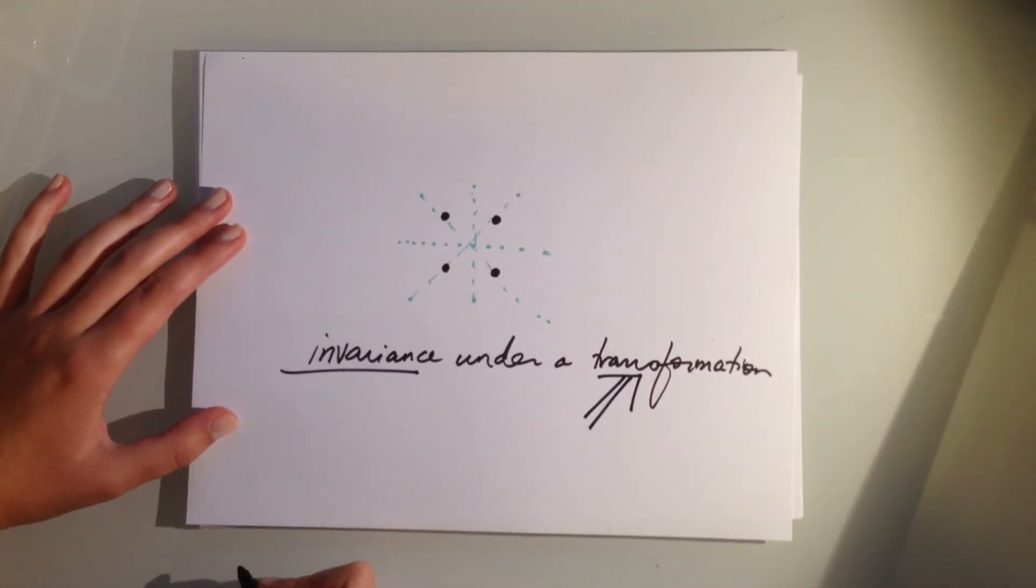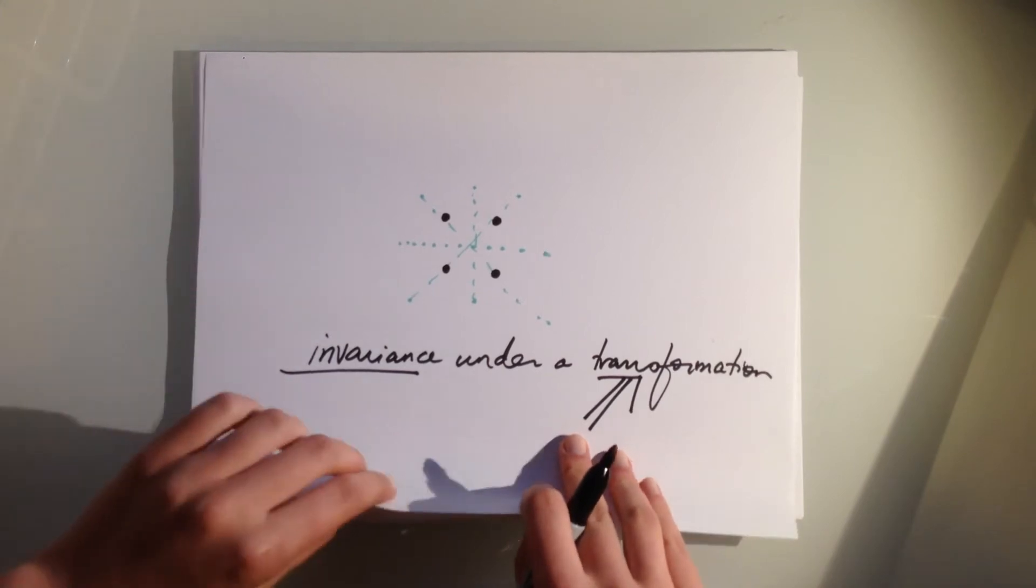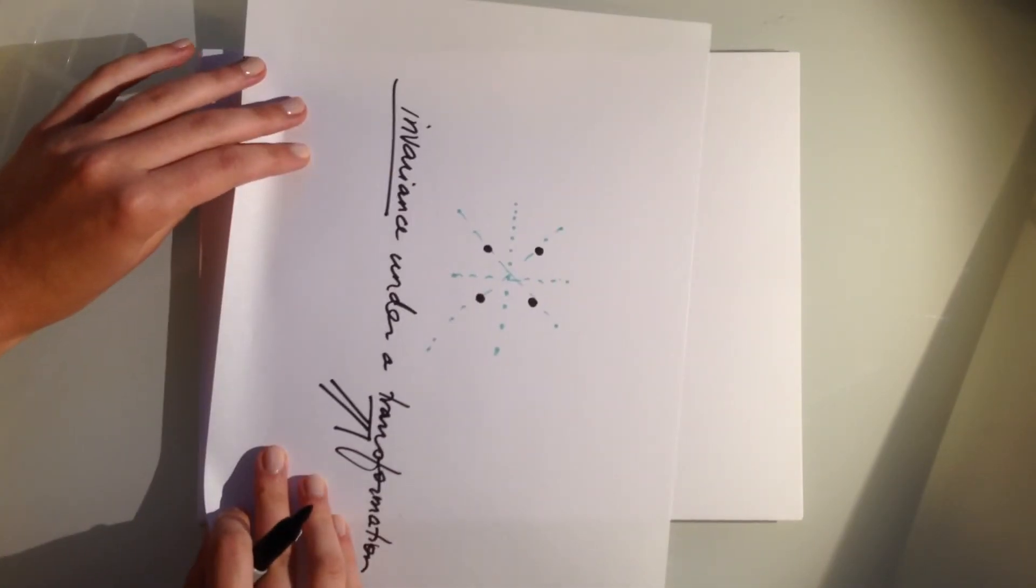If we apply a 90 degree rotation to the square, our transformation, it still looks like a square. Okay, so I think we've got the basic idea of a symmetry down.